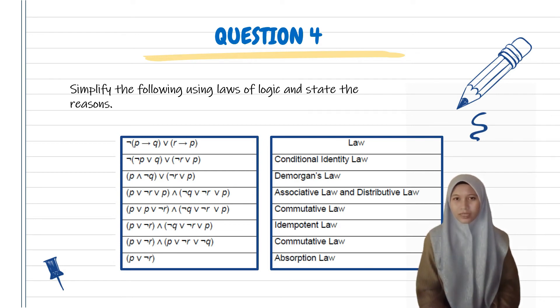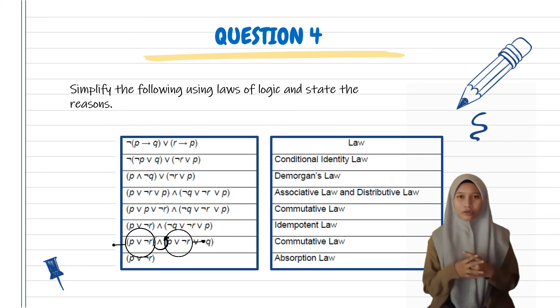Next, apply Commutative Law to rearrange the position so we can see the question more clearly. And after that, apply the Idempotent Law because there are two similar variables here. And then apply Commutative Law again. So we can see here that we can apply Absorption Law, and we get the answer: P OR NOT R.